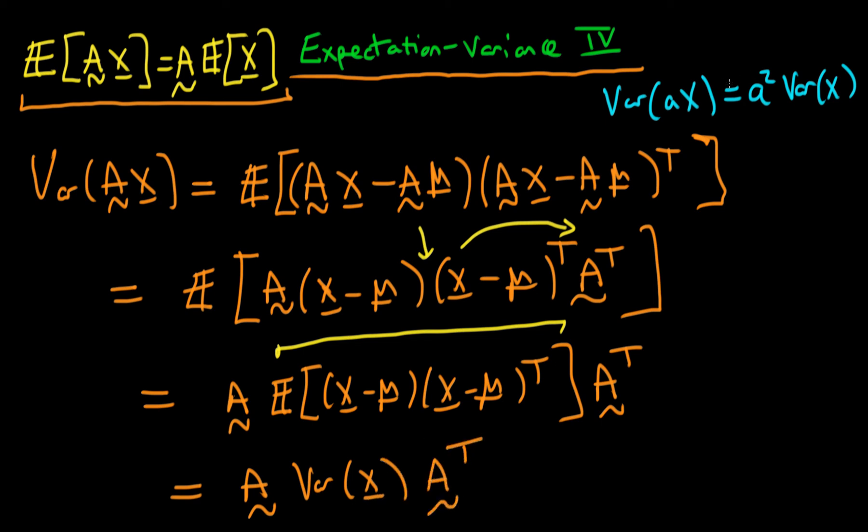So that's the analogous form which our variance takes on for the case where we're considering a random vector rather than just a scalar quantity.